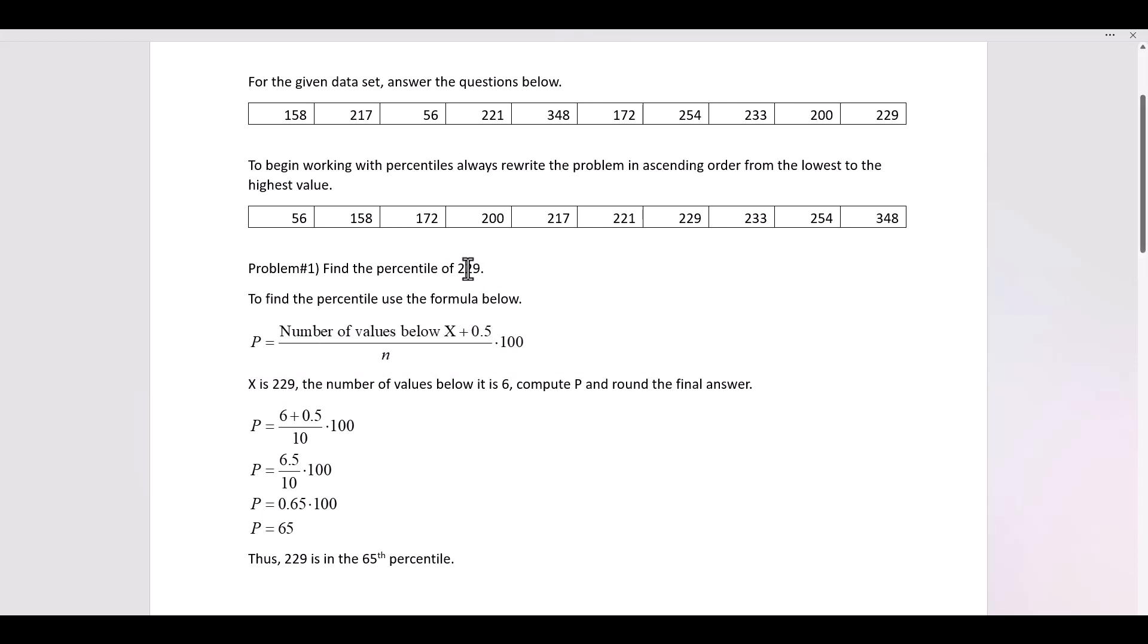So X is 229. The number of values below 229 is 1, 2, 3, 4, 5, 6.